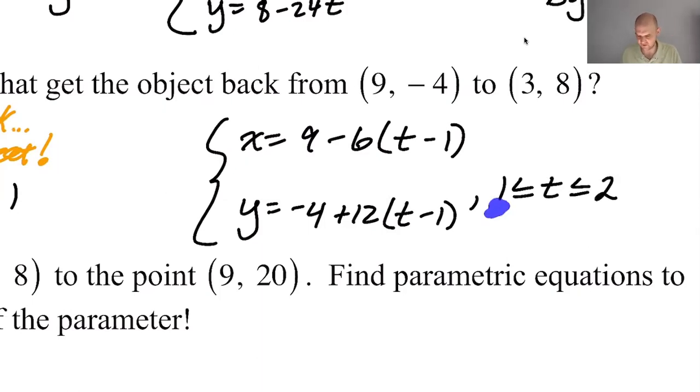Now think about what happens. When T equals 1, this gives me 0, this gives me 0, so I just get (9, -4). That's where I want to be when T equals 1. When T equals 2, this is going to be 1, so I get 9 minus 6, which is 3. I get -4 plus 12, which is 8. These are going to work.